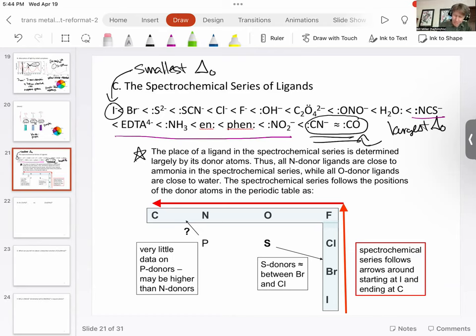Then we've got a whole series of compounds with oxygen donating a pair of electrons, and then it goes fluorine, chlorine, sulfur, bromine, and iodine as you go down.